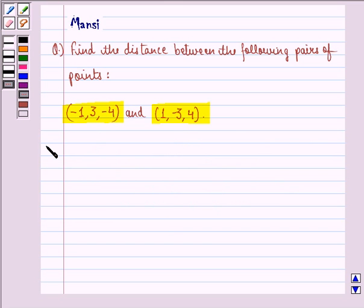So, using this key idea, we find out the solution to this question. Let the point P be (-1, 3, -4) and the point Q be (1, -3, 4). Then,